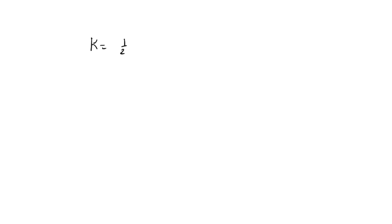The initial kinetic energy of the bullet is given by k is equal to half mv squared. We would put in the values; that is, k would be equal to — that's for this part here.